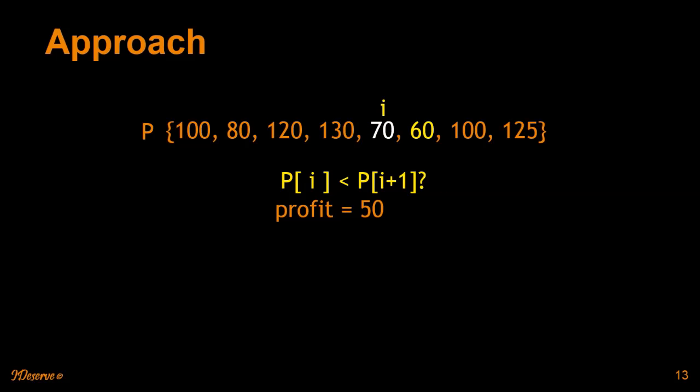Let's move ahead. Here again we have the same case where next day's price is lower than the current day's price, so we don't buy the stock at this point. Notice that we are not buying at 70 and selling at 100 because we are following an algorithm where we are finding an increasing price. There are two reasons for that. First, we are not allowed to do overlapping transactions.